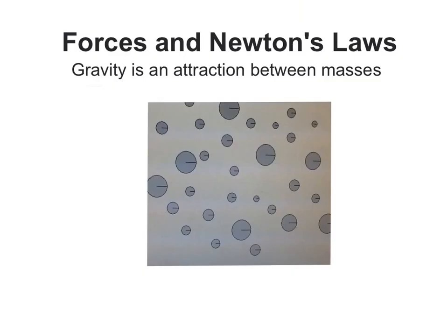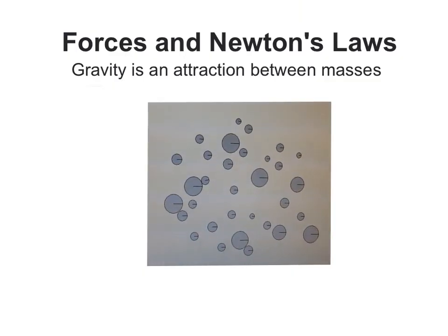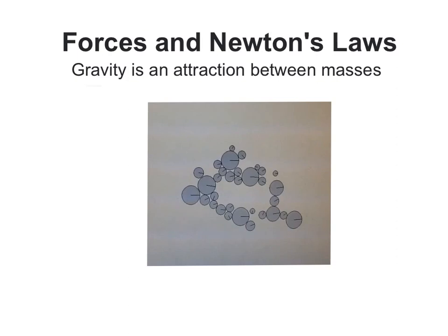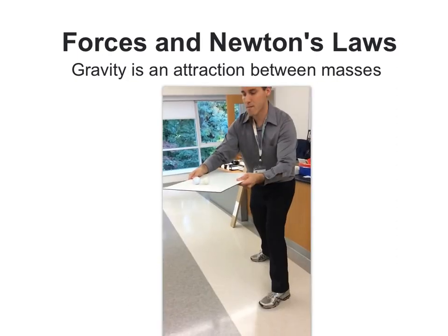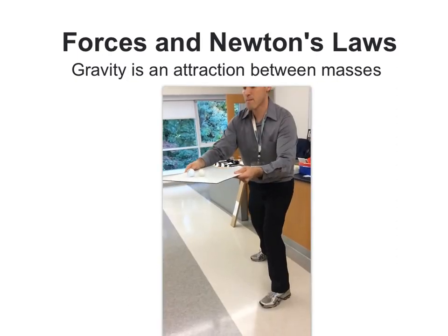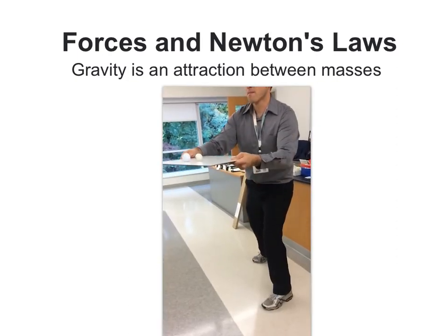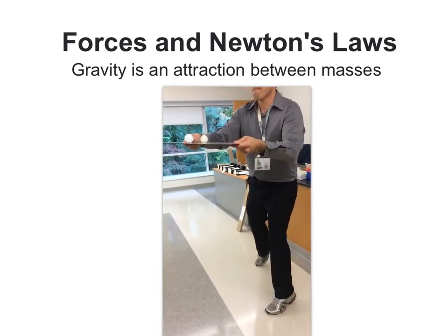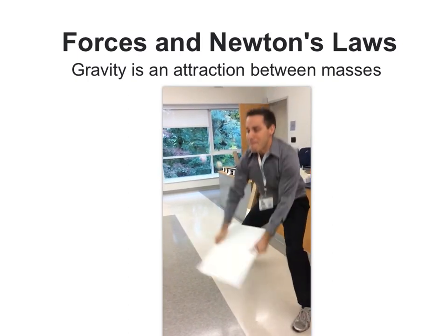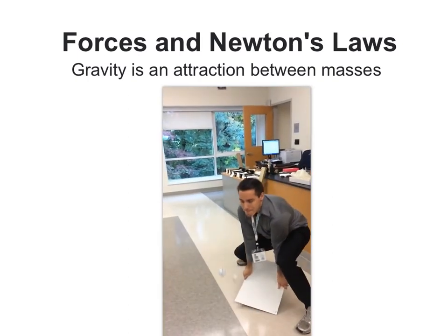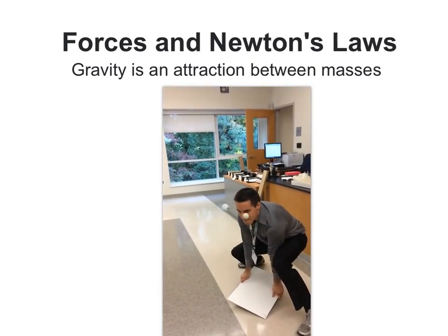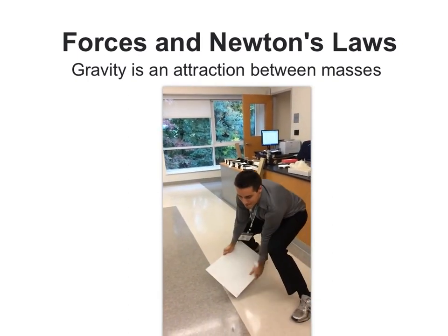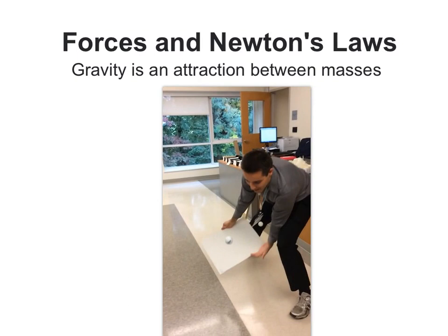Gravity is an attractive force which is responsible for matter falling into each other. When objects fall, it's an interaction between them and the Earth. They fall down, the Earth falls up. But because the Earth is so massive, we don't really see it move.